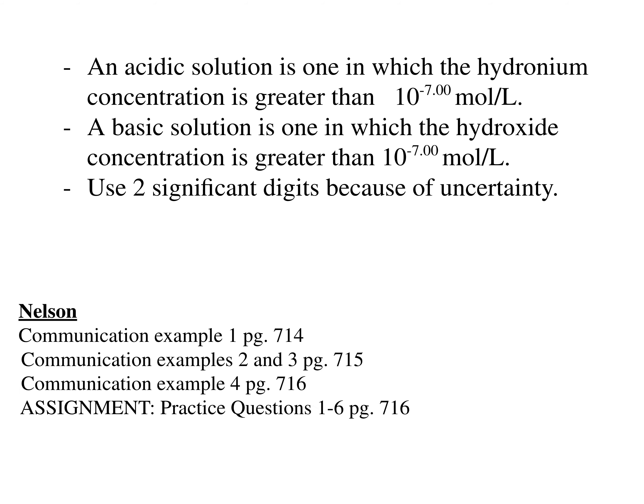An acidic solution is one where the hydronium ion concentration is greater than 10⁻⁷ mol/L, and a basic solution is one where the hydroxide ion concentration is greater than 10⁻⁷ mol/L. We typically use two significant digits here because of the uncertainty.